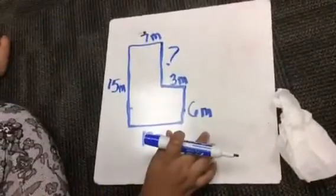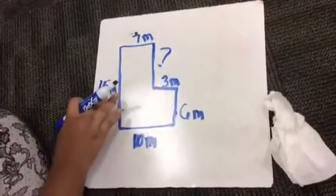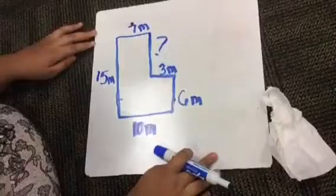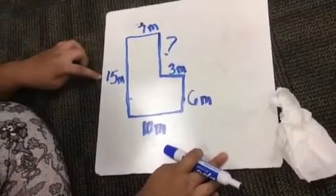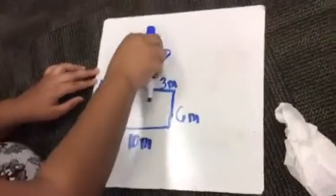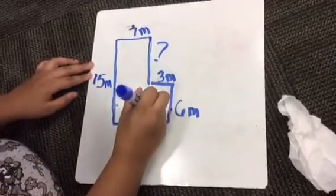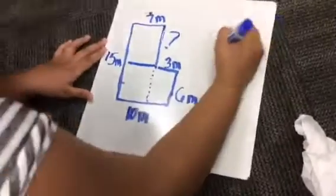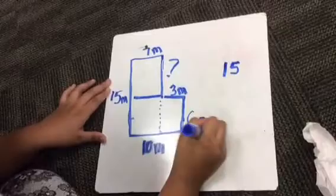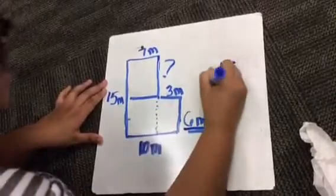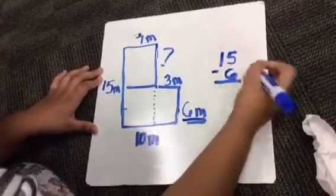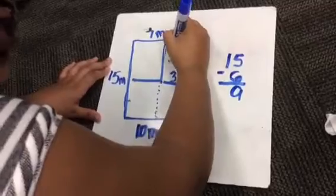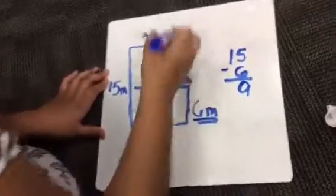Today we are going to learn how to find the missing length of a shape. First of all we find out that this place is having a missing length. In order to do the missing length you have to subtract. So in order to get it you see this line right here, this dotted line. So equal to that is the 15. So you do 15 and then you minus the 6 because that's not in there. So you minus the 6 to get 9. So you erase this and put 9 meters for the missing length.